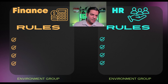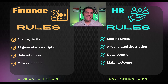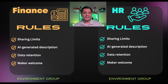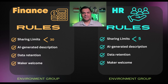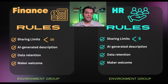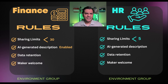Let's talk about how the Finance and HR departments handle these features differently but side by side. When it comes to the Finance department, their sharing criteria is that they should be able to share apps with up to 30 people. However, HR is a little stricter — they want to make sure it doesn't go beyond five. And thanks to environment group, both of their own policies can be matched. When it comes to AI generated descriptions, the Finance team is lenient — if app makers don't put a description, let the AI automatically generate it.